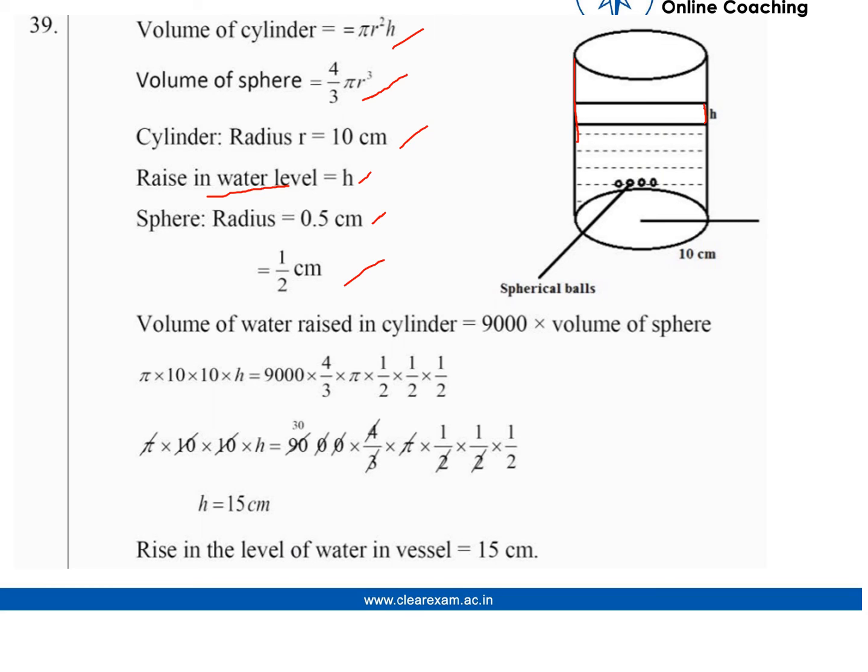Volume of water raised in cylinder equals 9000 times the volume of one sphere. So πr²h = 9000 × (4/3)πr³. When we solve this equation, we get h = 15 cm, which is the answer we need to find for the rise in the level of water in the vessel.